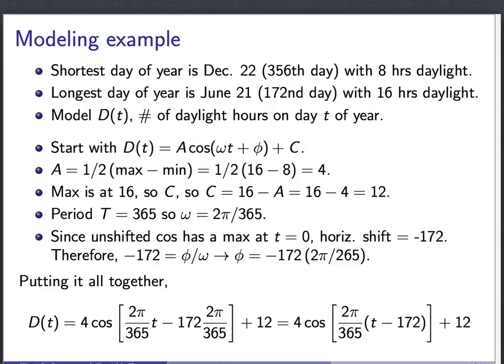Now let's conclude with a little modeling example. And this is something I mentioned earlier in the screencast. It's the example of modeling the number of daylight hours in a day across the span of a year. The shortest day of the year is December 22, that's the 356th day, and there are 8 hours of daylight on that day. It's the dead of winter. Longest day of the year is June 21, that's the 172nd day. And this is in the height of the summer. There are 16 hours of daylight on that day.